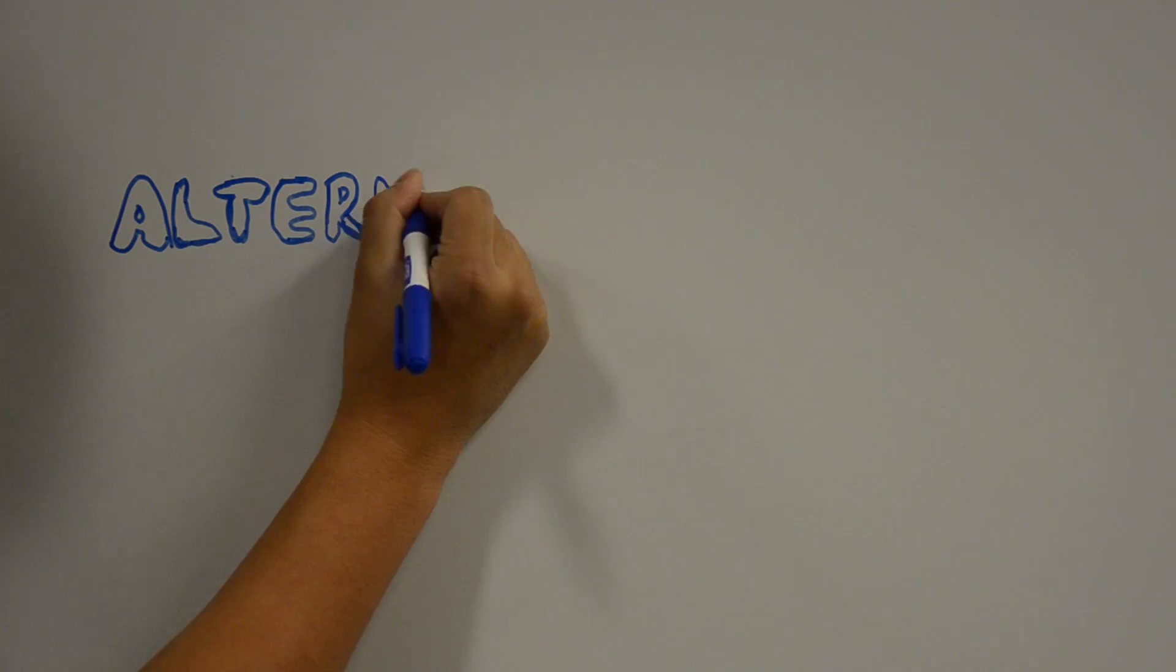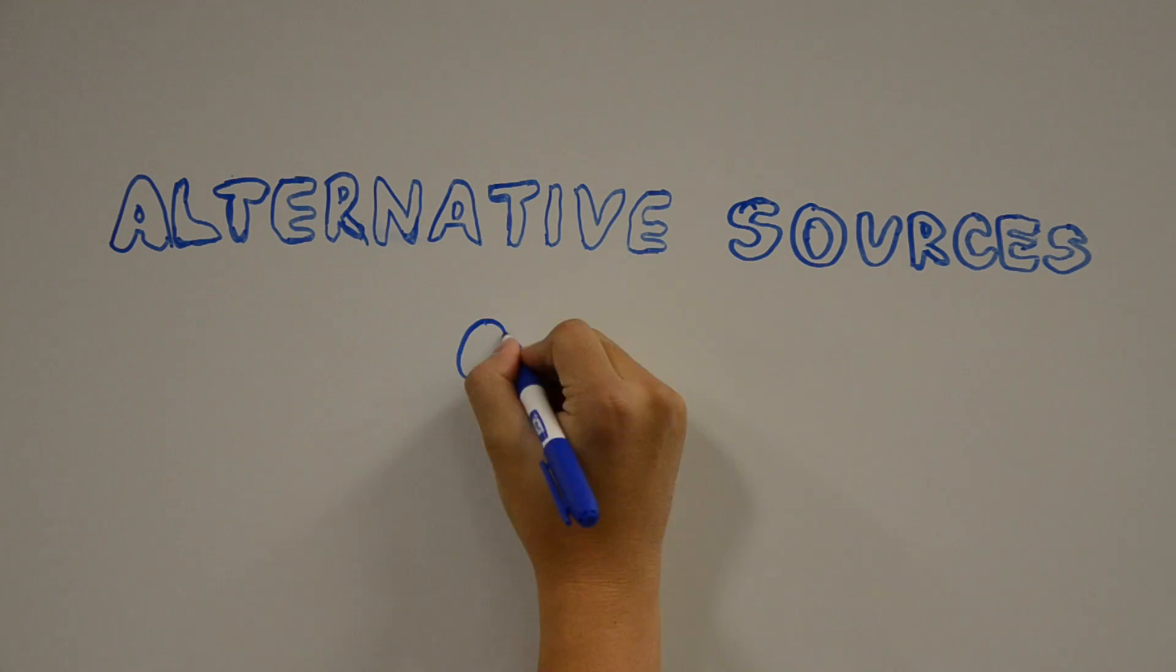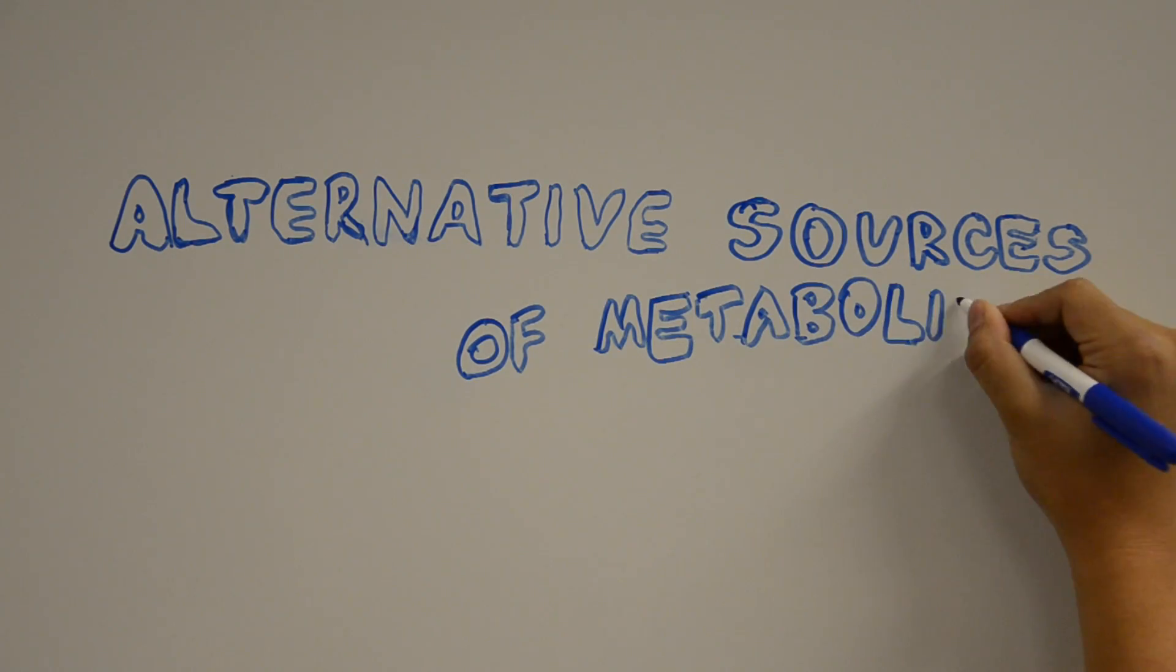Today we'll be looking at the peculiar metabolic mechanisms of the fascinating world of bacteria, the so-called alternative sources of metabolism. Bacteria can be divided into matrices of three metabolic divisions.